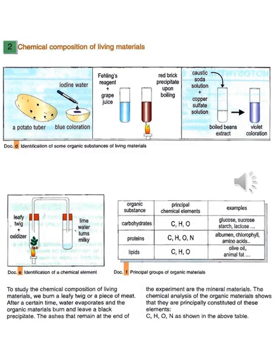According to Document E on page 19 of your textbook, they also identified the production of carbon dioxide: heating a leafy twig in an analyzer turns lime water milky, indicating that an organic material containing carbon is being produced by green plants.